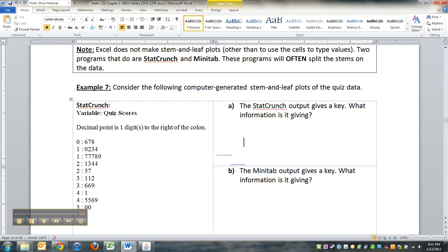But first we're going to talk about this key. So there's the key. It's a little bit odd to see. That's how StatCrunch makes them. I love StatCrunch for a lot of reasons but I do not enjoy its stem and leaf plot key. What's happening is that they're telling you that the decimal point is one digit to the right of the colon.